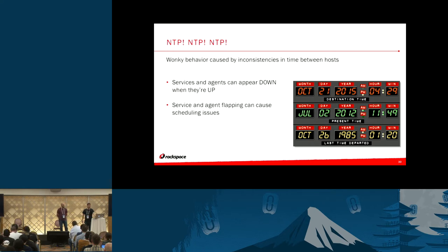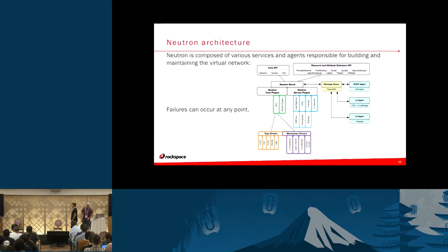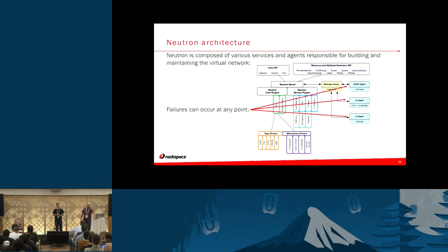Let's move on to Neutron. Neutron itself is composed of many different services and agents that are responsible for constructing and maintaining the virtual network. Failures can occur at any of those points — either the DHCP agent, L2 agent, L3 agent, just to name a few.